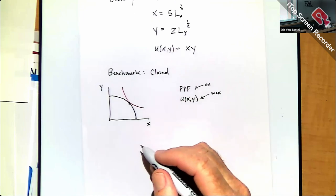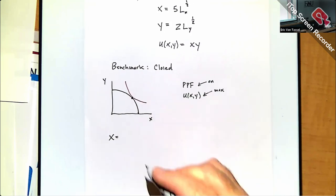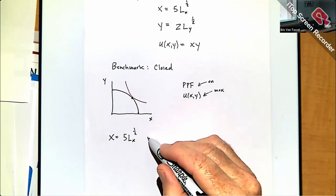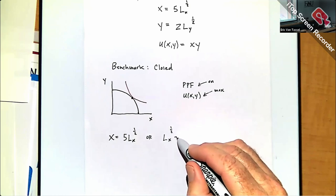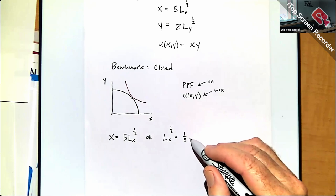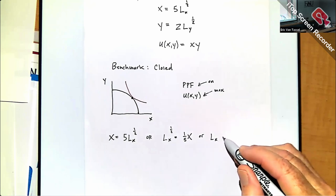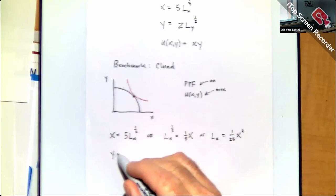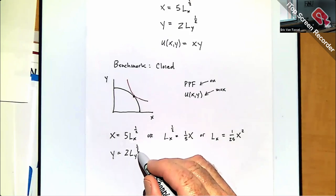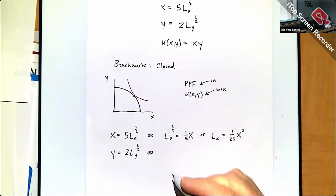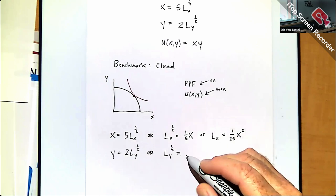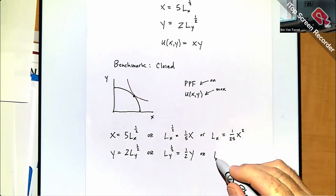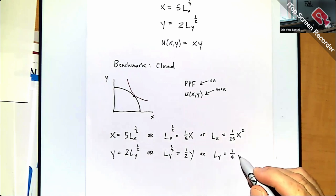To find the PPF, take the production function for X and solve for labor: LX^(1/2) = (1/5)X, so LX = X²/25. For good Y: LY^(1/2) = (1/2)Y, so LY = Y²/4. The resource constraint is LX + LY = L-bar = 120, giving: X²/25 + Y²/4 = 120.